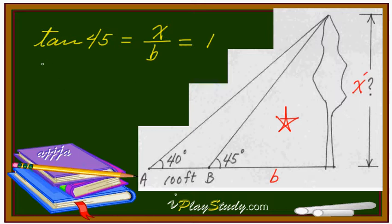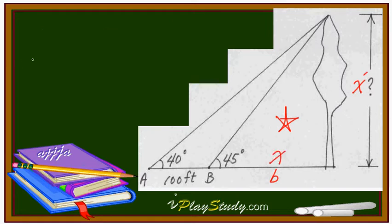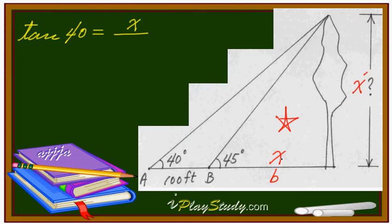That means X equals B. Since X equals B, I can substitute X for B. Now we are looking for X, so this time we use tangent of 40 degrees. Tangent 40 equals the height over the base — opposite over adjacent — which is X over (X plus 100).